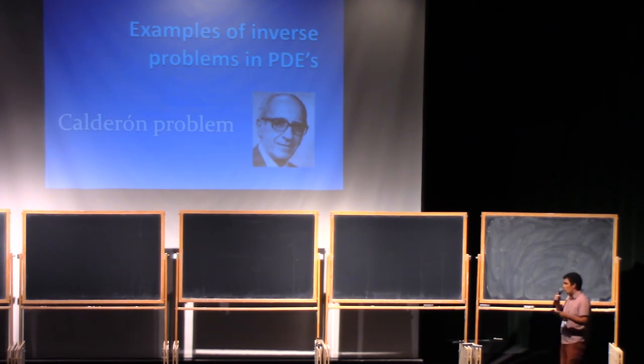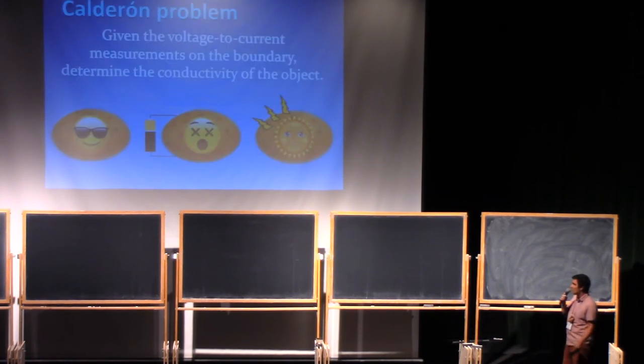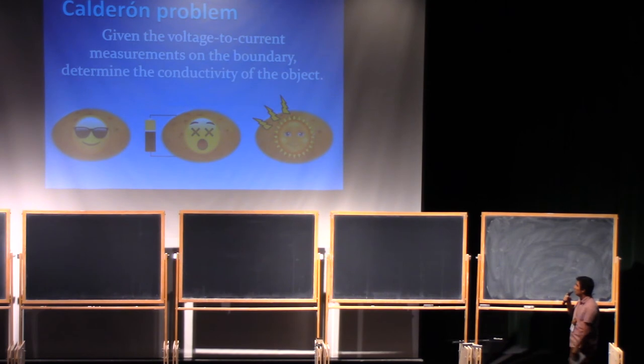This question dates back to when Calderon was an engineer in Argentina. The problem is the following: if we have a potato, a happy potato, we put some voltage on the boundary, and then this voltage induces voltage in the inside, and that makes a current flow to the outside of the potato. So we are only measuring things on the boundary of the potato.